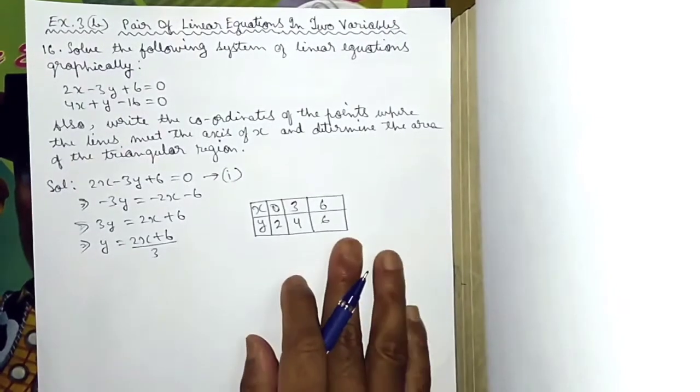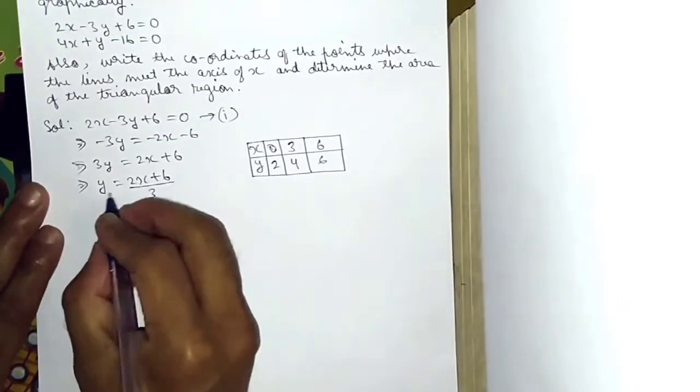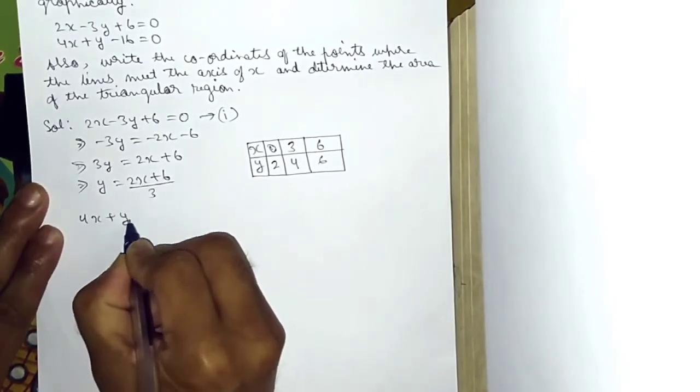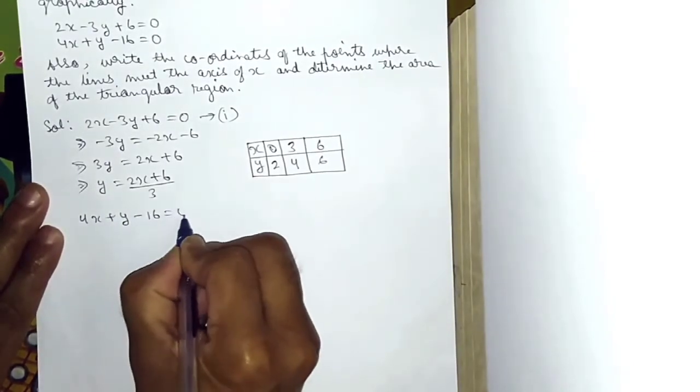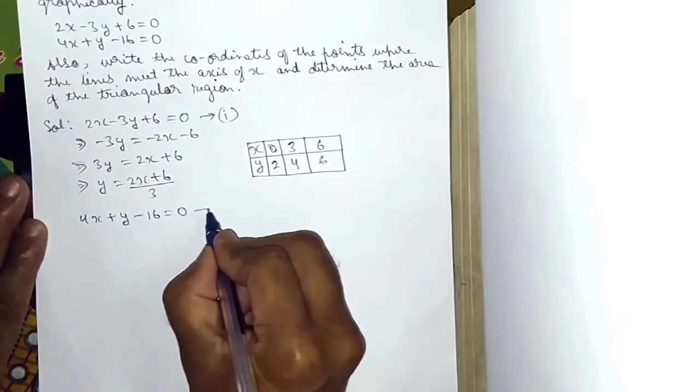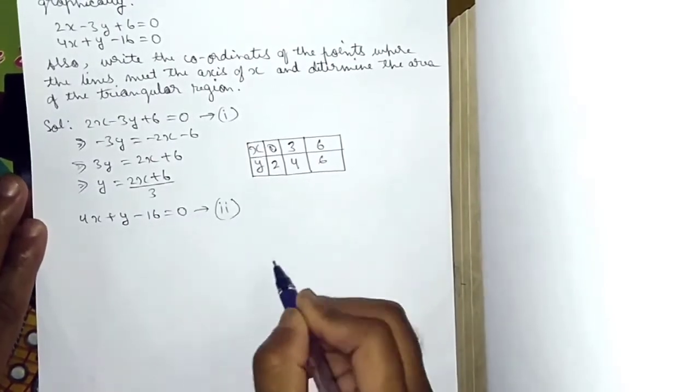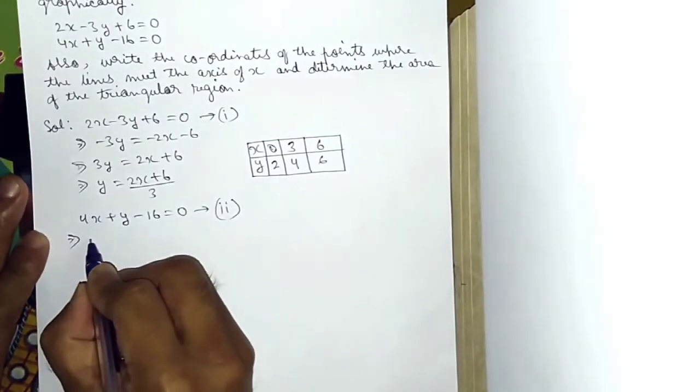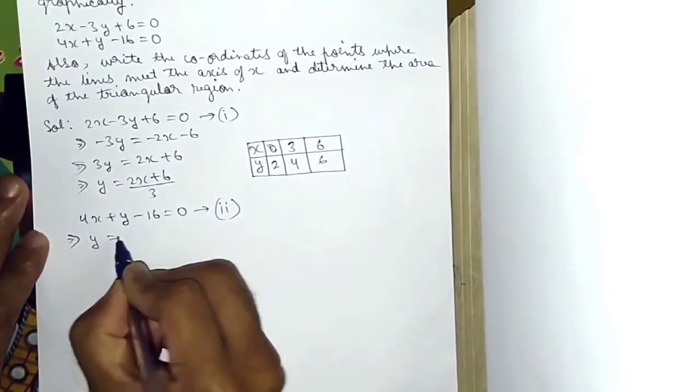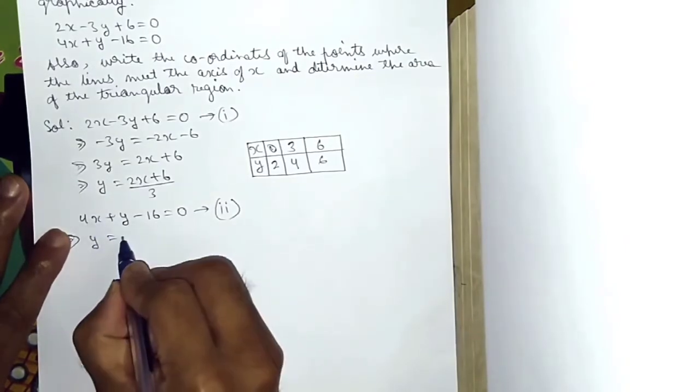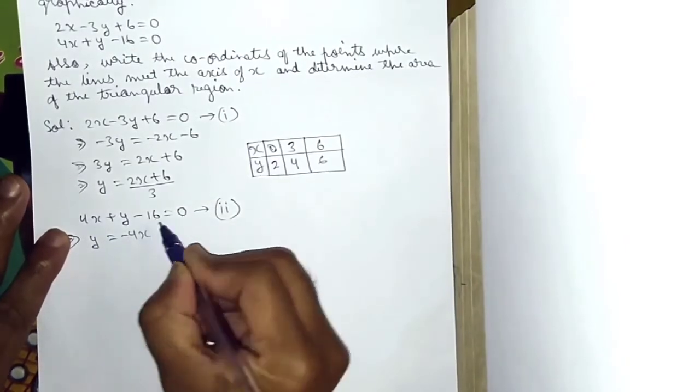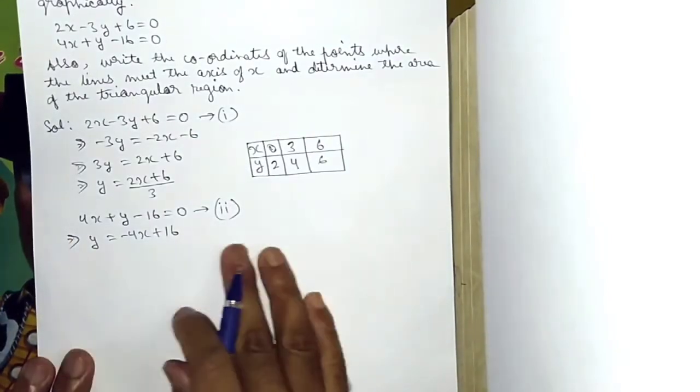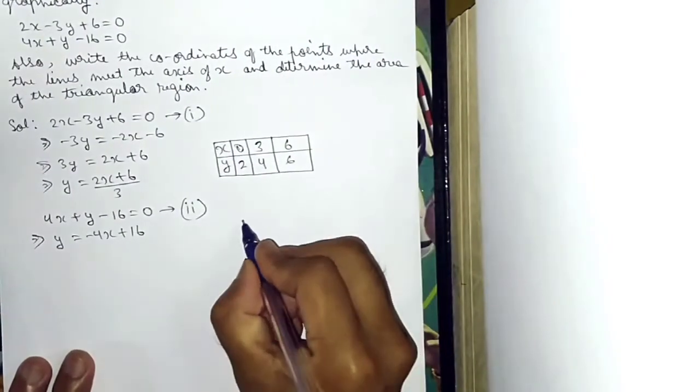The second equation: 4x plus y minus 16 is equal to 0. This implies y is equal to minus 4x plus 16.